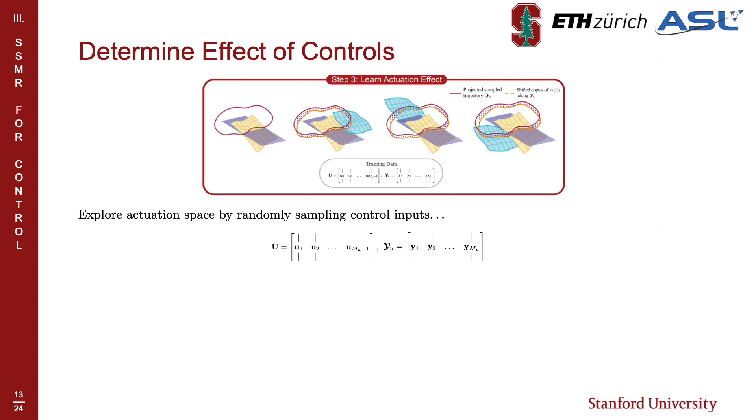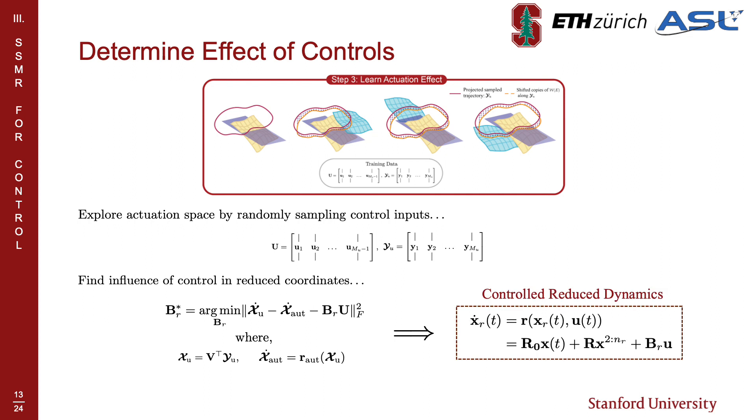Finally, we learn the effect of actuation in the reduced coordinates by exploring the robot's actuation space. We then formulate a regression problem to find the control matrix which best explains how the autonomous SSM is translated under the influence of control. This gives us the SSMR-controlled dynamics shown in the bottom right.